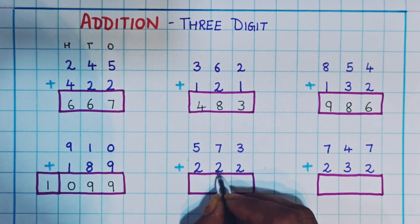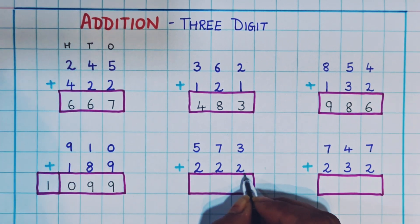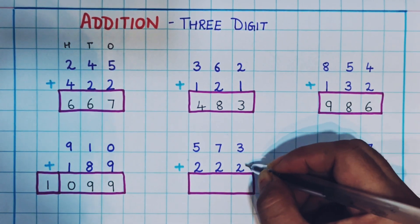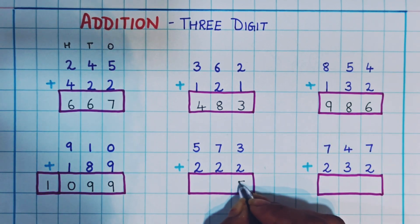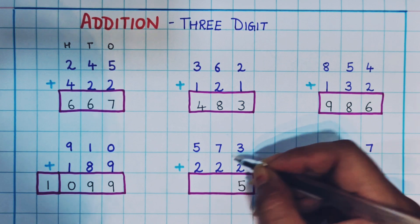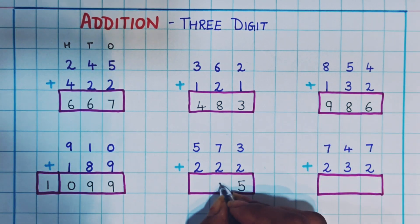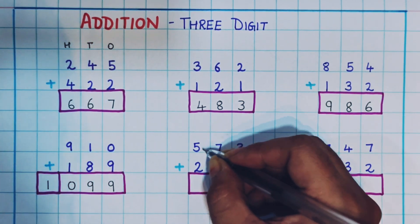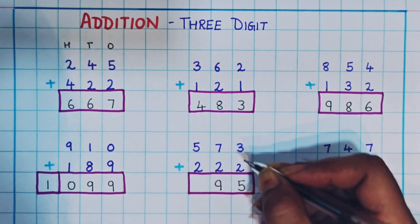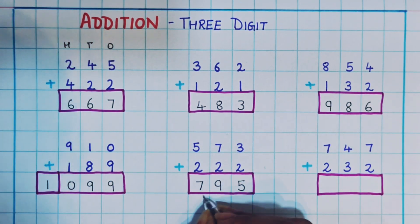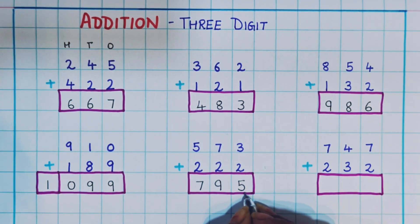Now let's see the next one: 573 plus 222. Now 3 plus 2: 3, 4, 5 — here I will write 5. Then 7 plus 2: 8, 9 — here I will write 9. Then 5 plus 2: 5, 6, 7 — here I will write 7. So the answer is 795.